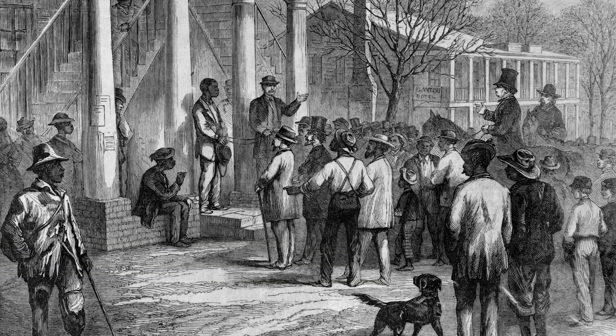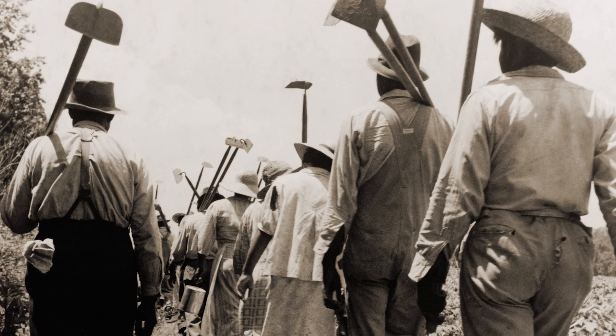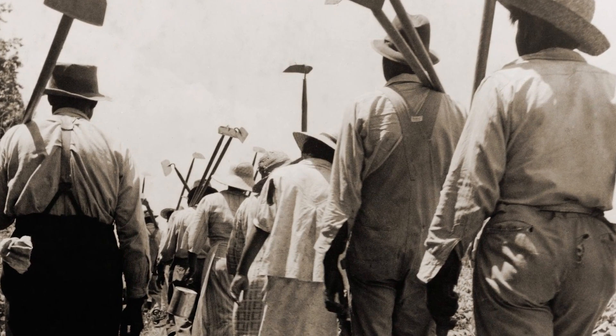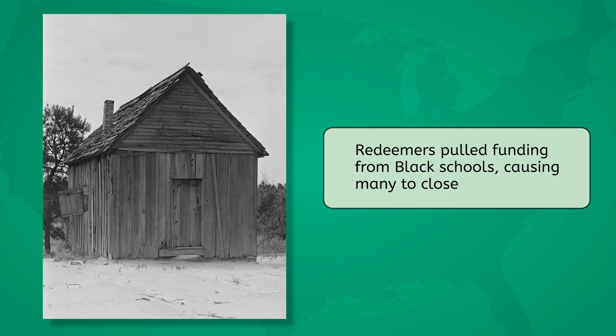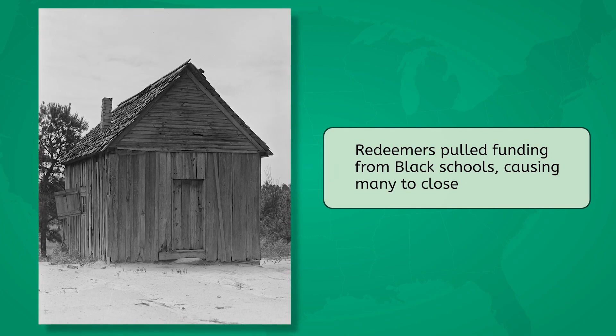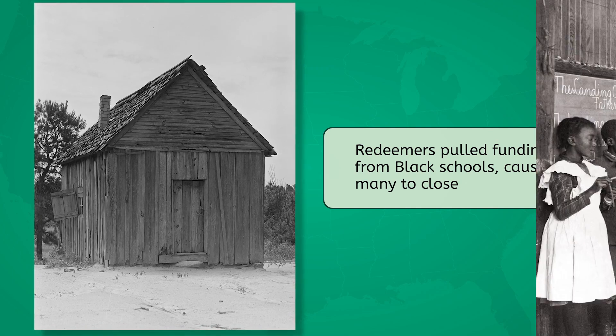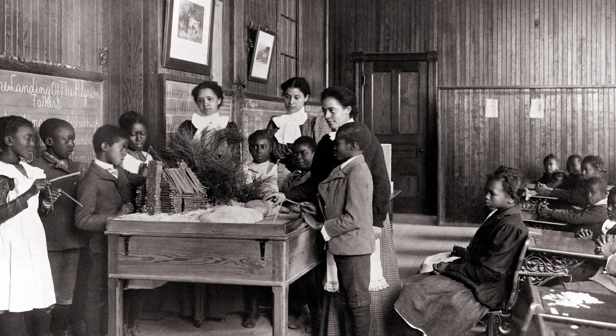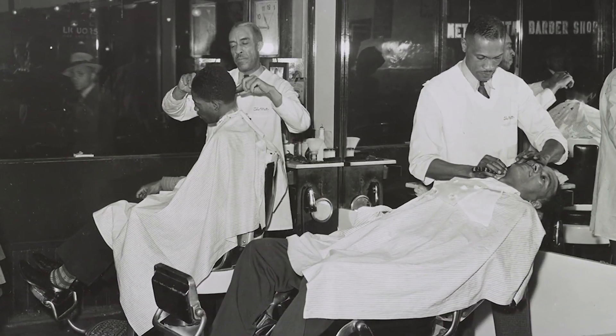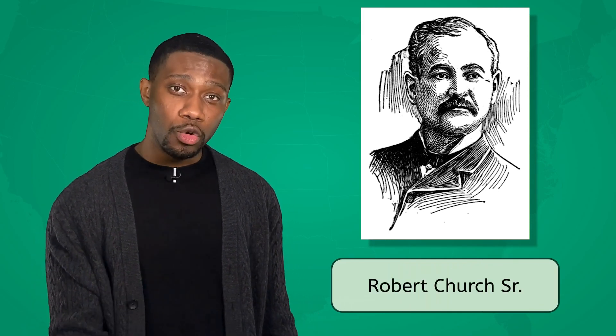Redeemer governments tried to undo what Reconstruction politicians had done by creating more Black codes. They forced Black workers back onto plantations under tightly controlled working conditions. Redeemers pulled funding from Black schools, causing many to close, and imposed unfair taxes targeting Black citizens. But even facing oppression, some Black students still got an education, and many Black businesses thrived. For example, Robert Church Sr., born into slavery, became a successful entrepreneur in Memphis, Tennessee. He founded Solvent Savings Bank, the first Black-owned bank in the United States, and invested in infrastructure to rebuild Memphis after a devastating yellow fever epidemic.